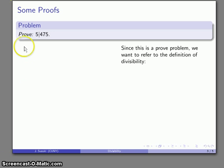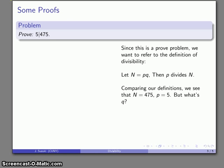What do we want? Well, if N equals the product of p and q, then p divides N. Now I'll compare our definitions: N is 475, p is 5, so the problem is we have to figure out what q is.